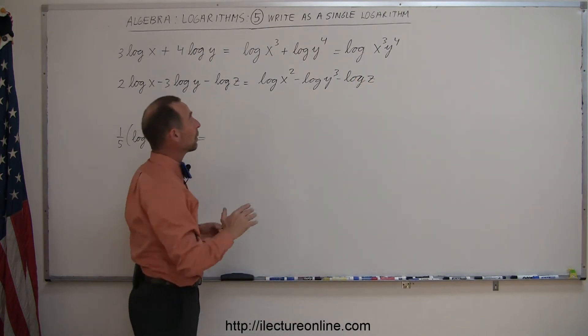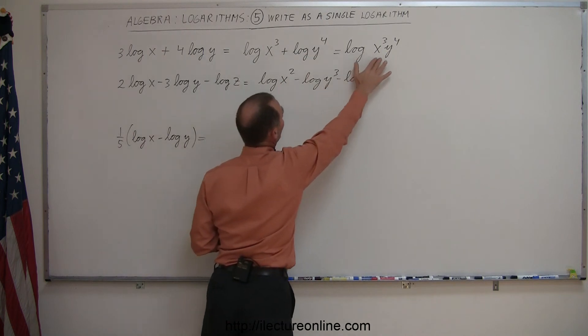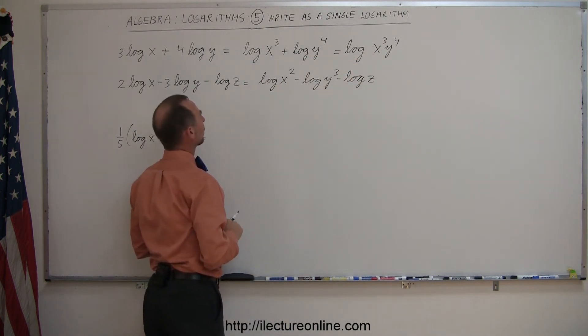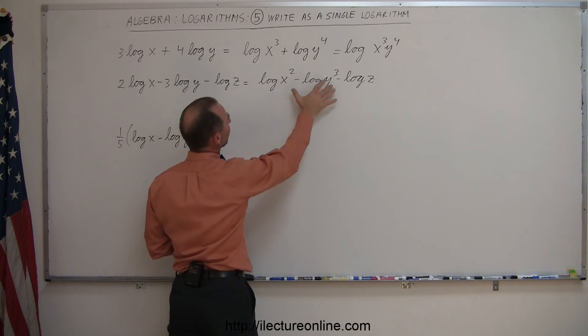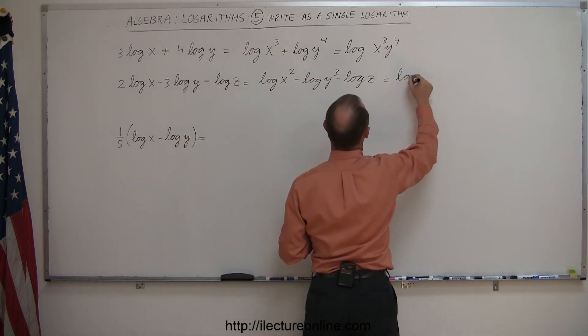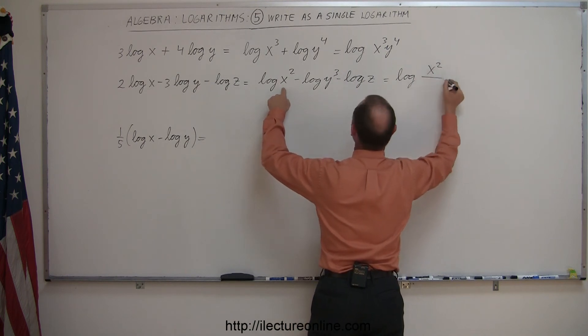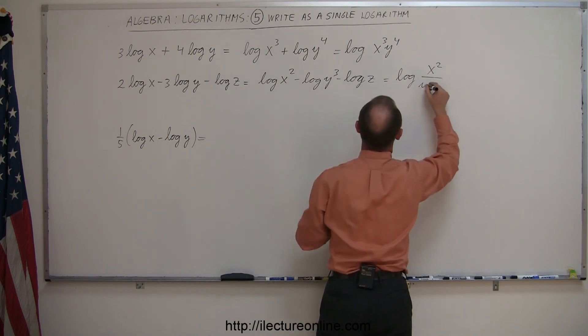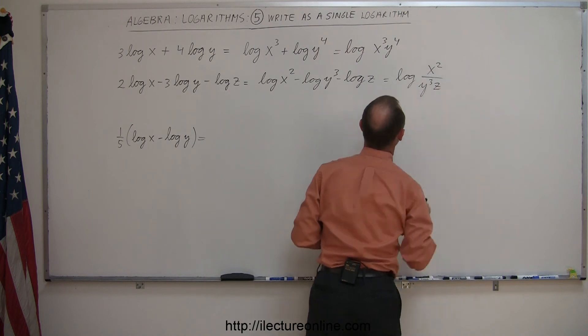Now we remember the rule that when we add, we can multiply the two values. And when we subtract, we can divide. So this can now be written as the log of x squared in the numerator and both the y cubed and the z in the denominator.